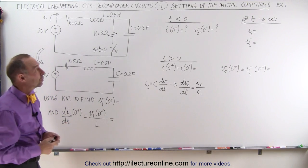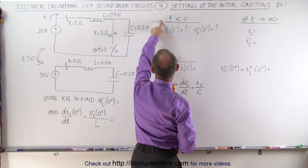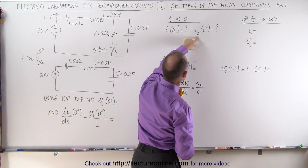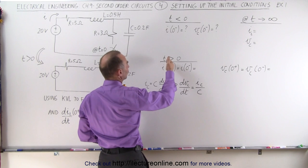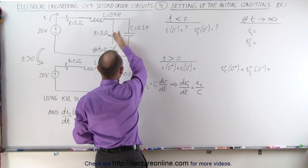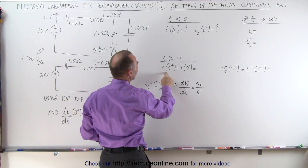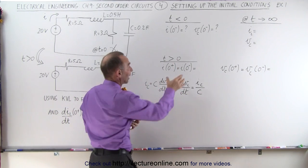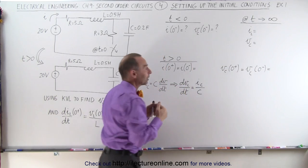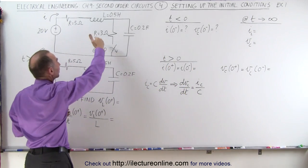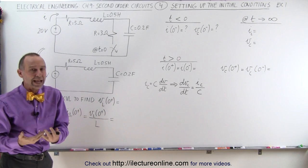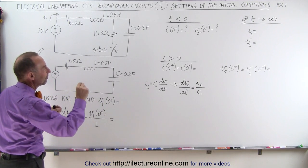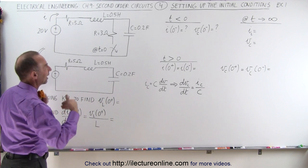First, we're going to find — before the switch is opened — what the current is to the circuit and what the voltage is across the capacitor. Then after the switch opens, we're going to find the current and the voltage right after. They'll be exactly the same as right before, because since we have an inductor and a capacitor in the circuit, it takes time for them to react to a change. So we'll have the exact same current and voltage after the switch opens as we did before.